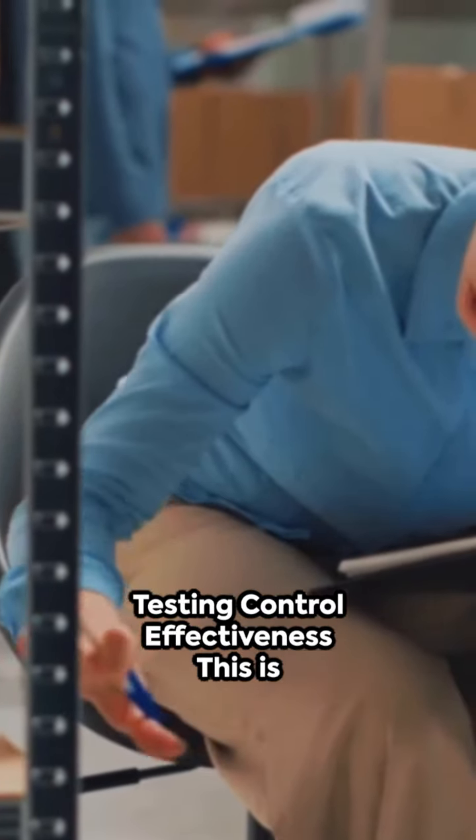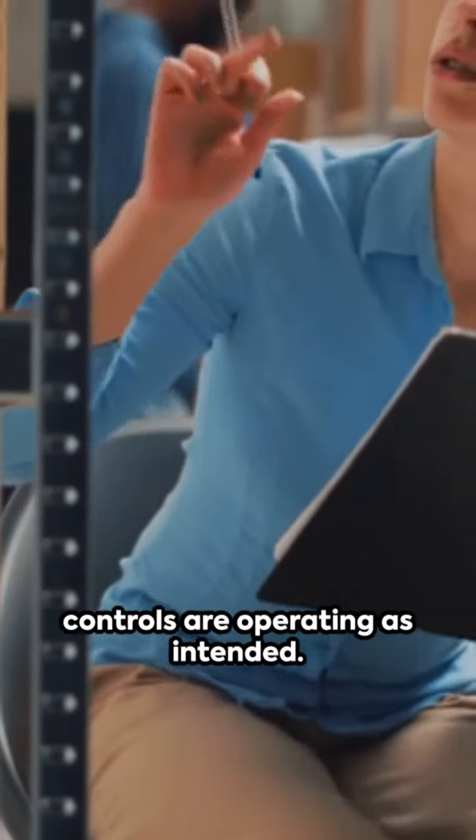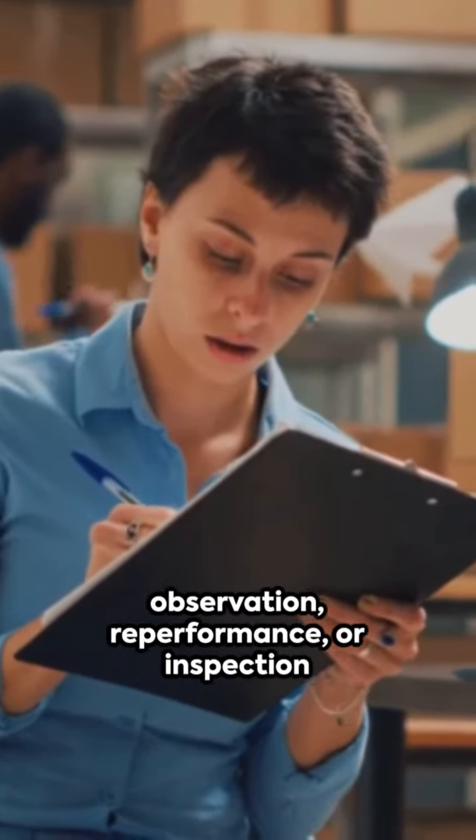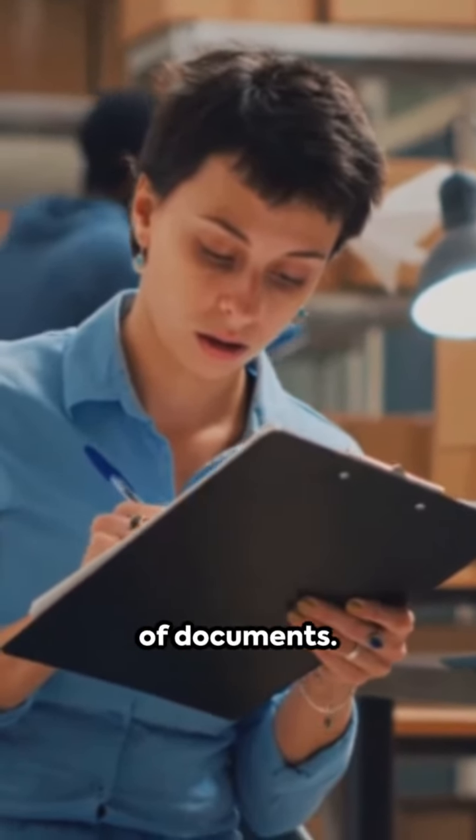Testing control effectiveness. This is where you perform tests to see if the controls are operating as intended. It might involve procedures like observation, re-performance, or inspection of documents.